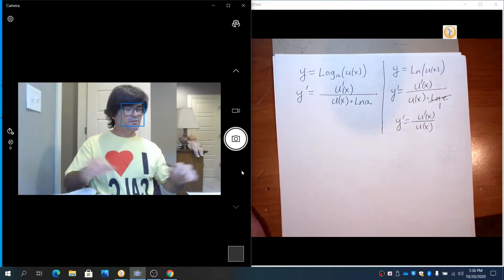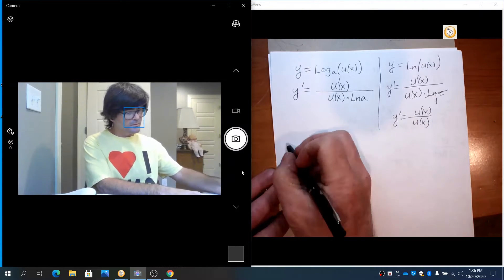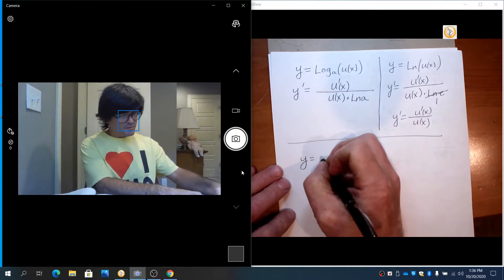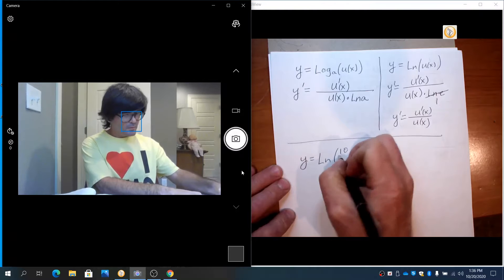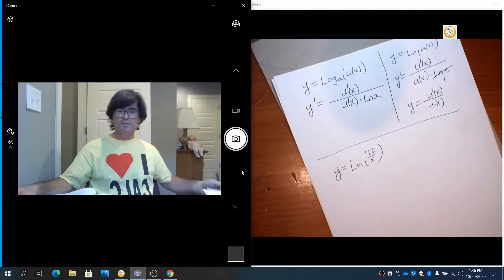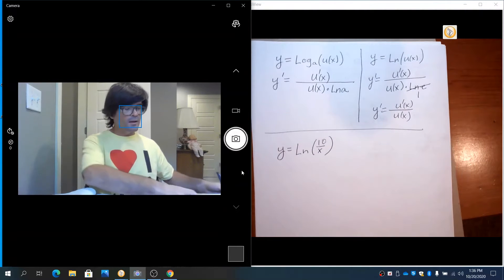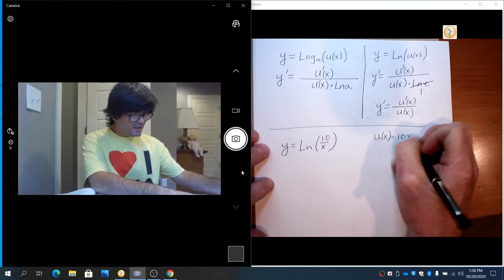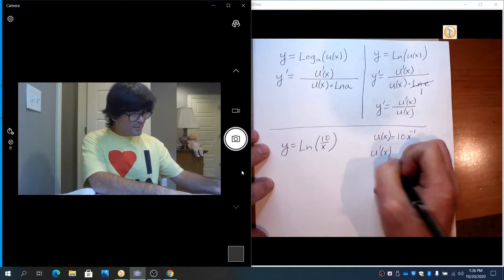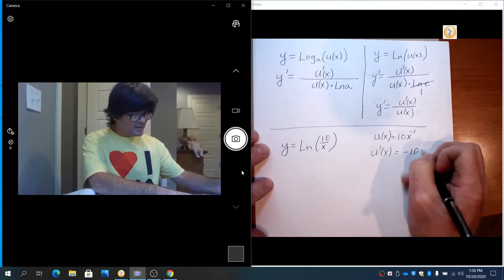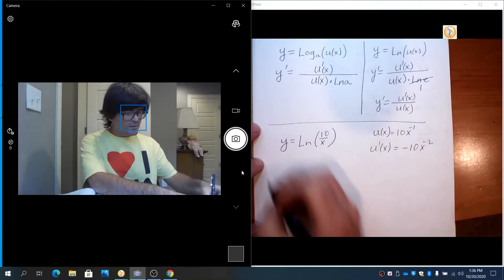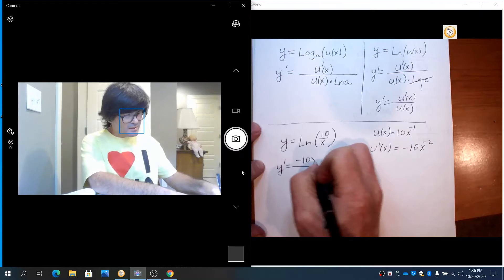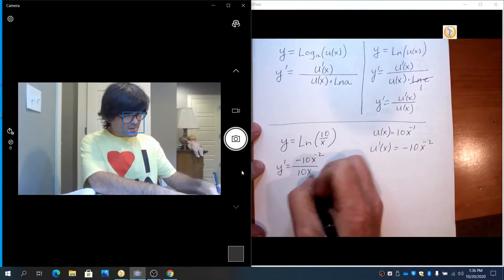So let's just practice using this for a couple minutes. y equals natural log of 10 over x. Let's just start right there. In this case, u, I'm going to write this as 10x to the negative 1. u prime is negative 10x to the negative 2. And so the derivative there is going to be negative 10x to the negative 2 over 10x to the negative 1.